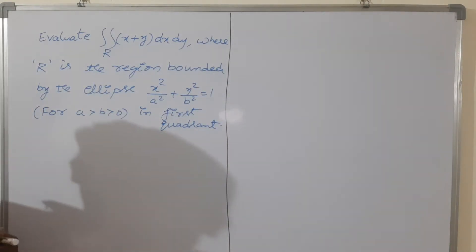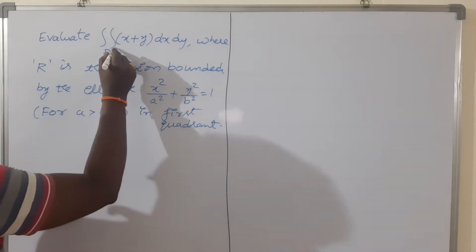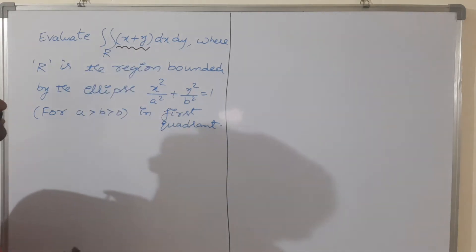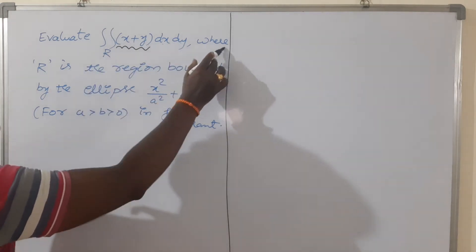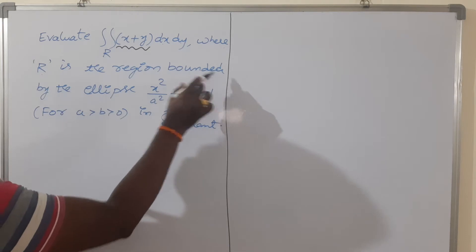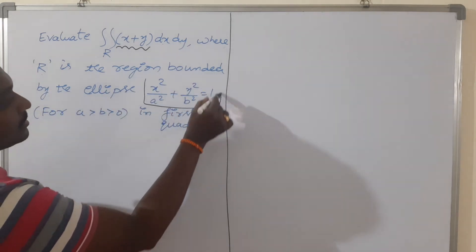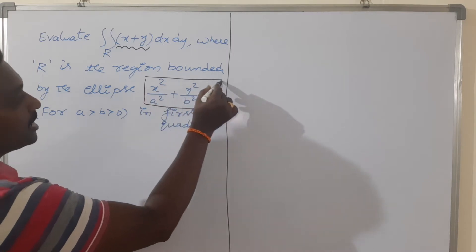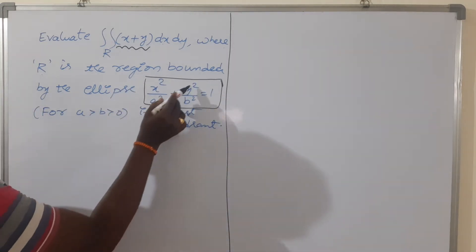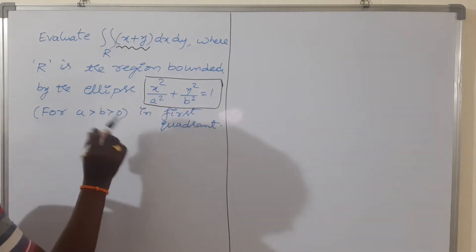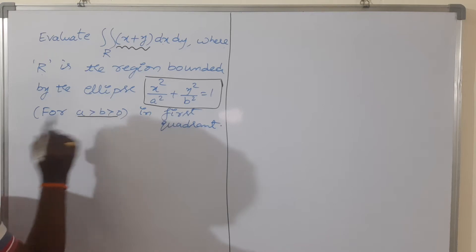See this problem. Evaluate the double integral of the function x plus y with respect to x and with respect to y, where r is the region bounded by the ellipse. You are all very familiar with the equation of the ellipse: x squared by a squared plus y squared by b squared is equal to 1. In the standard form of the ellipse, always a is greater than b.